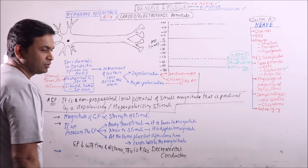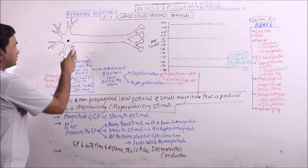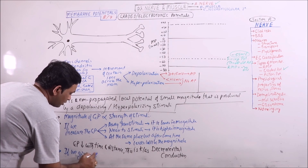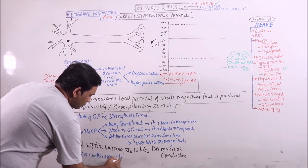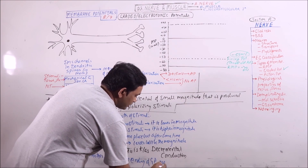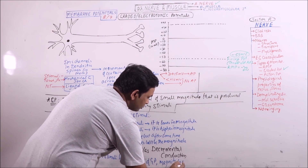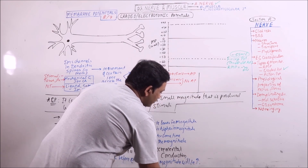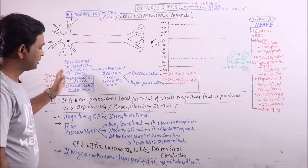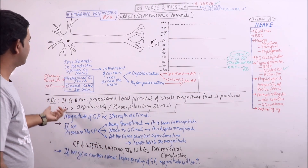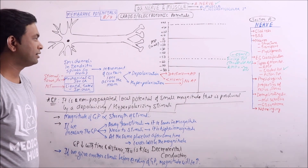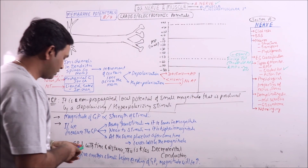If we give another stimulus before the graded potential is ending, the magnitude will be increased. Because if one stimulus opens up some ion channels, then another stimulus given before the ending of the graded potential will involve more and more ion channels, resulting in greater magnitude. So these are some features of the graded potential.